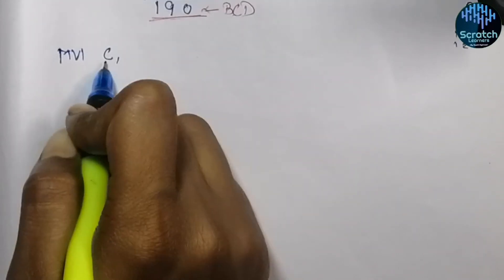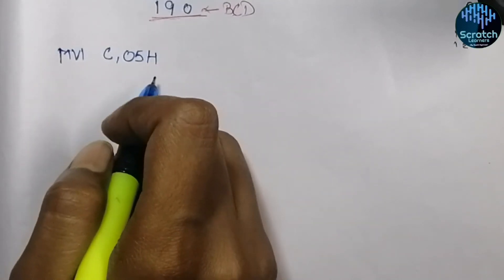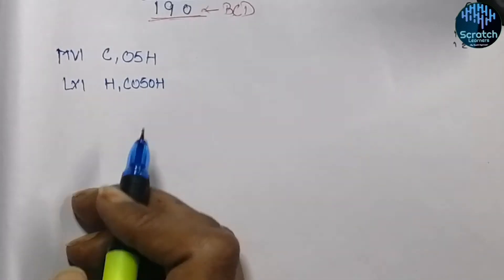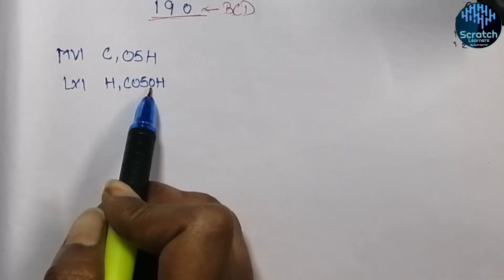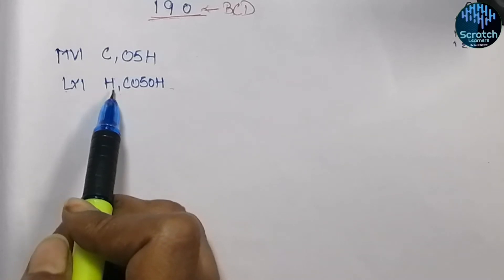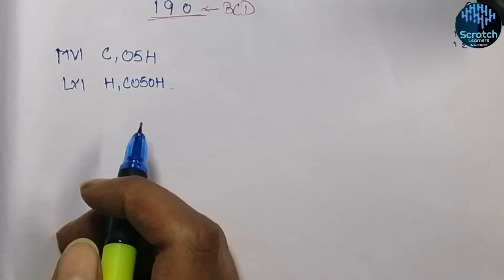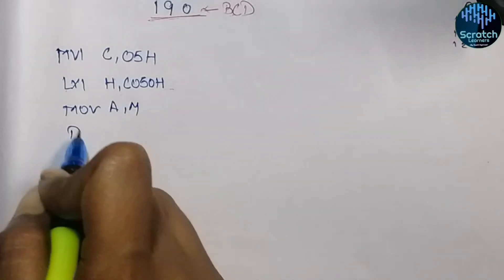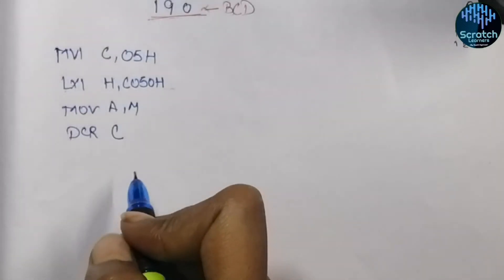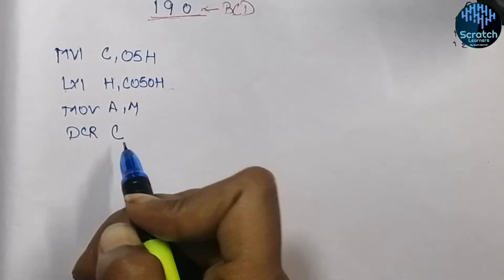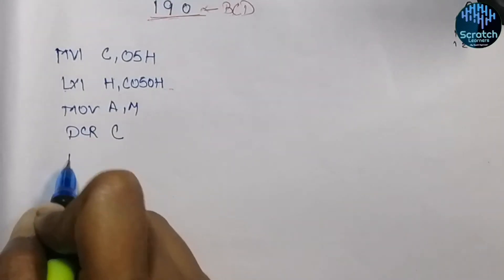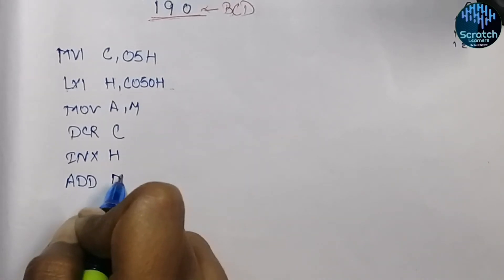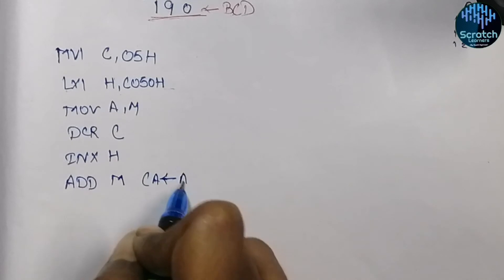First of all, initialize the C register with 05H — five elements will be added. Also initialize the B register with 00H to hold the carry. Then initialize the HL register pair to point to memory location C050H, which is where the first input is stored. Move the first data into the accumulator, then decrement the count using DCR C. Next, use INX H to point to the second data, then ADD M — this performs accumulator = A plus M.